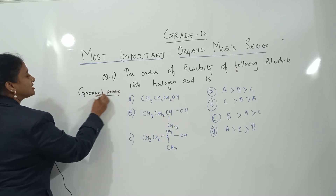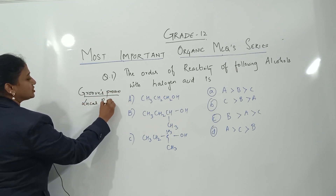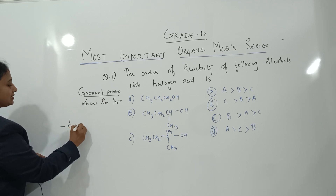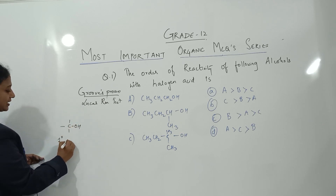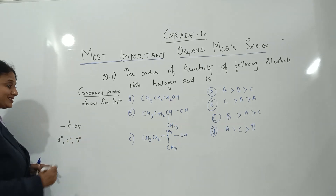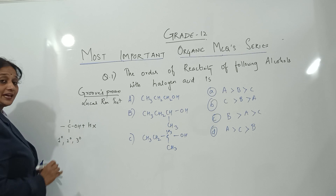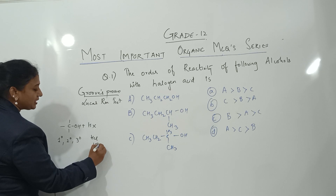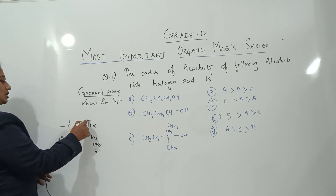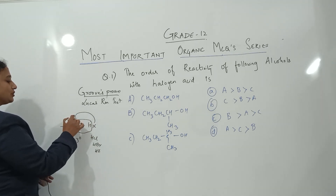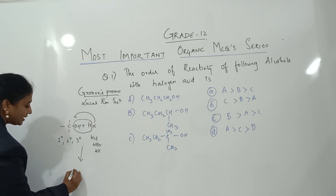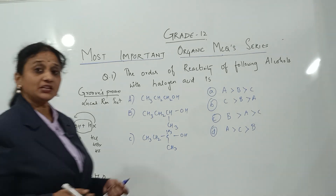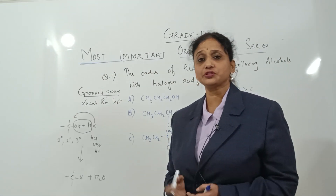Let's go through the concept. The Grooves process, or Lucas reagent test: whichever alcohol you take — whether primary, secondary, or tertiary — when it reacts with a halogen acid HX (which can be HCl, HBr, or HI), a water molecule comes out and X replaces it. The product is an alkyl halide along with water.